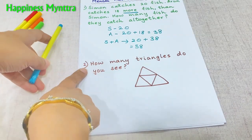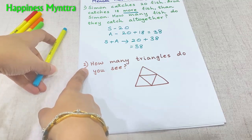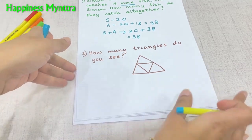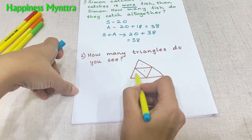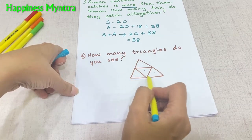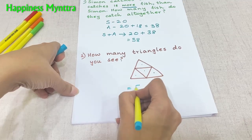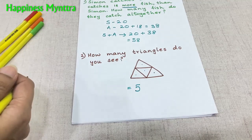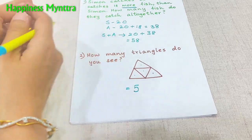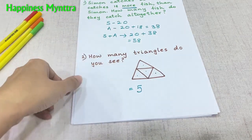How many triangles do you see? Very simple — 1, 2, 3, 4, and this whole complete triangle. So it's going to be 5 triangles. So the children understand about parts and whole as a concept.